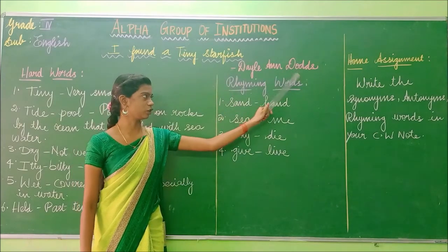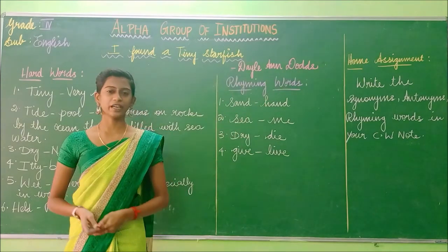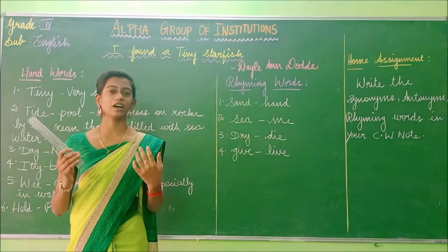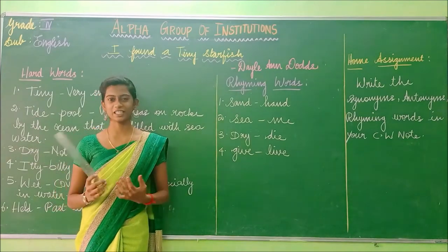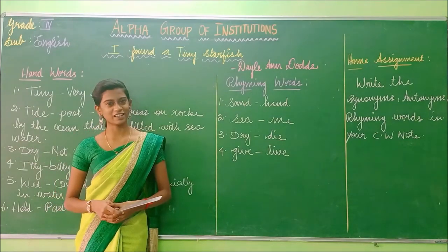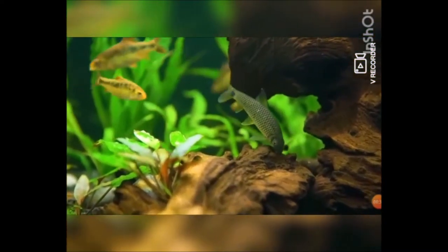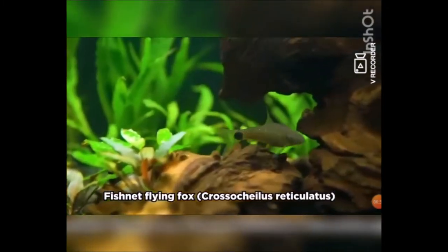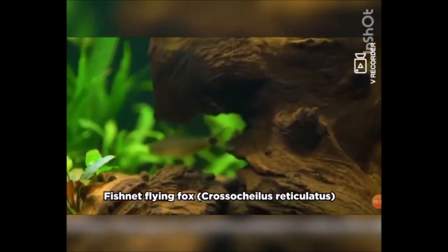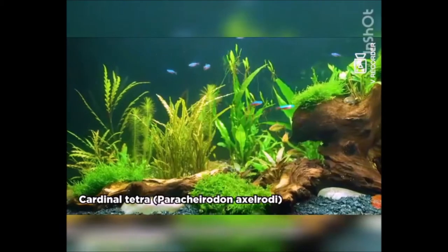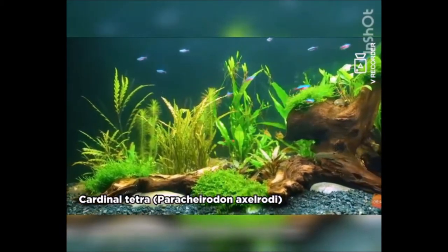So before going into the poem, I am going to show you something interesting. Are you ready to see that? Students, what do you see in this video? This is known as an Aquarium. What is meant by Aquarium? Aquarium means a glass container filled with water in which fish and water animals can be kept.